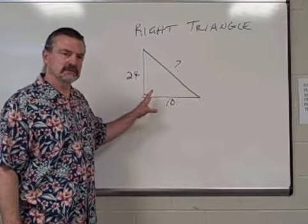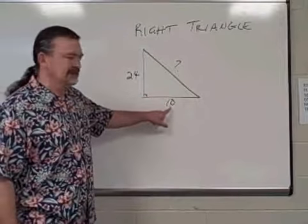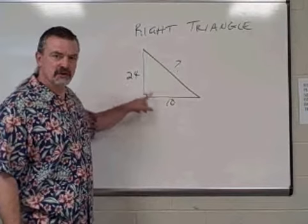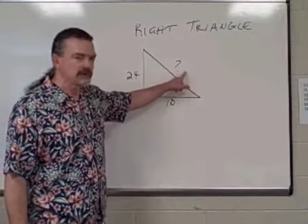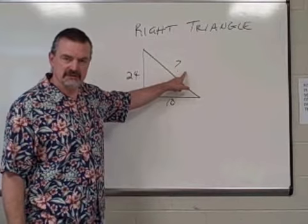Consider this right triangle. We know that the lengths of the legs are 10 and 24 units, but we don't know what the length of the hypotenuse is.